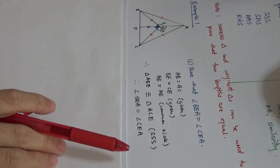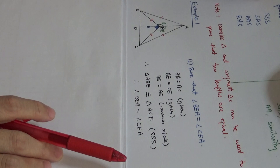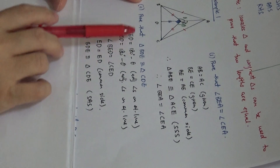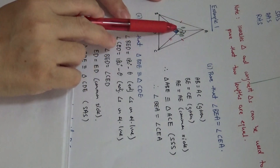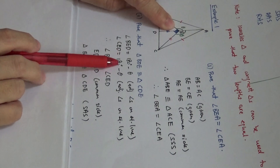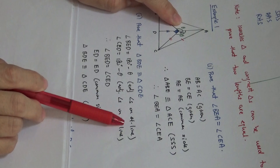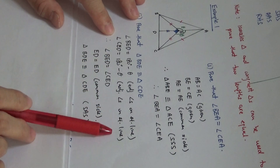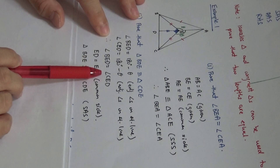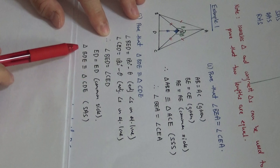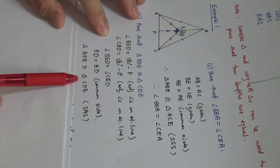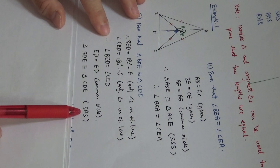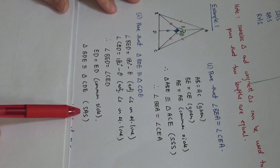Next part: we are supposed to prove that triangle BDE and triangle CDE are congruent. Angle BED is 180 minus theta — adjacent angles on straight line. Angle CED is also 180 minus theta — adjacent angles on straight line. Therefore angle BED equals angle CED. ED is a common side. So triangle BDE is congruent to triangle CDE because of SAS, since it's an included angle.